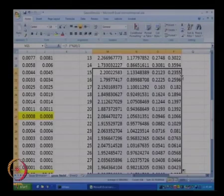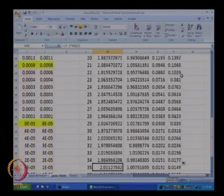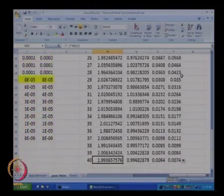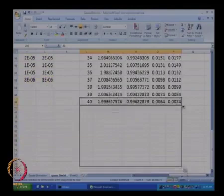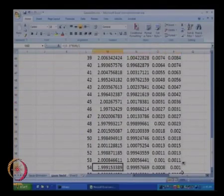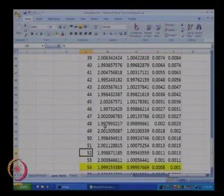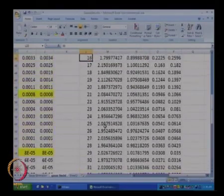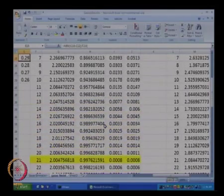I have double clicked over here and Excel has filled the values and we want our overall error to be 10 to the power minus 3 at least. So we need to drag this a little bit further. We have still not reached, yes. Finally, after 54 iterations, we have reached the solution.